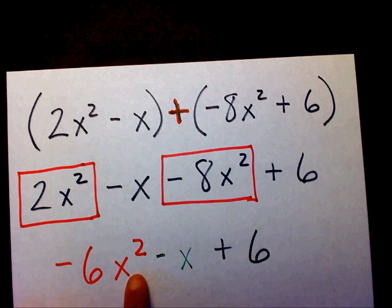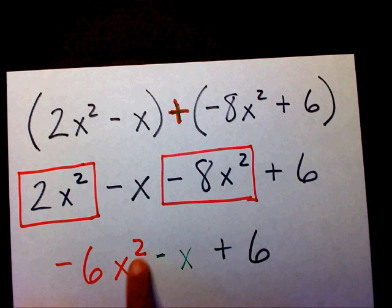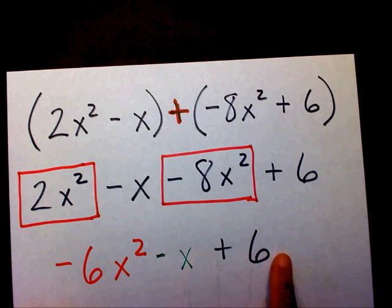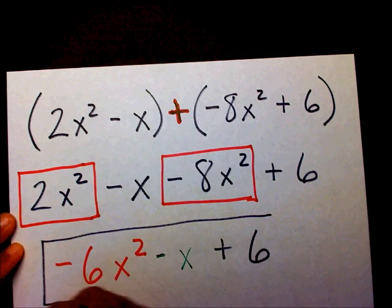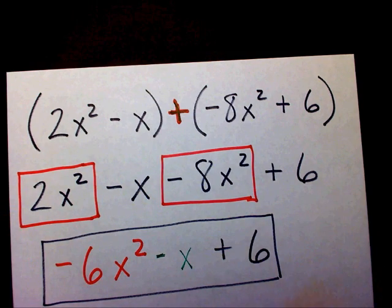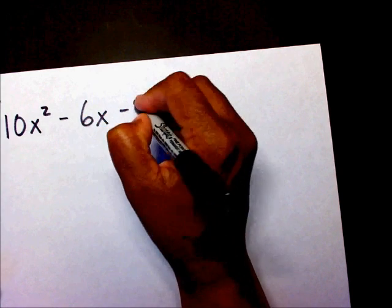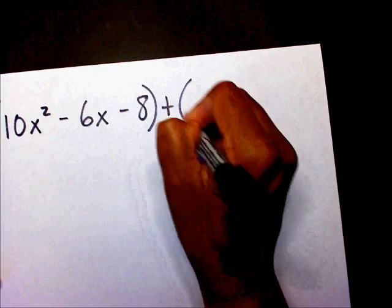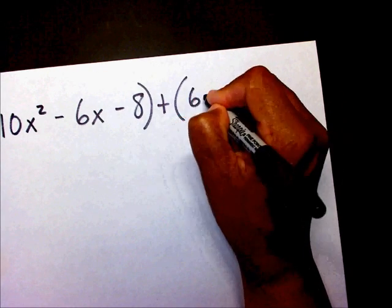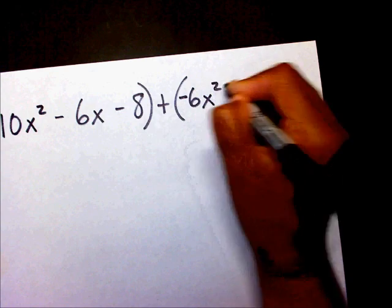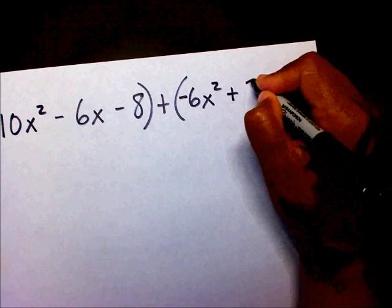Now that I've combined my like terms, I want to make sure my exponents are in descending order, so here's my final answer: negative 6x squared minus x plus 6. Now let me let you try one: 10x squared minus 6x minus 8, plus negative 6x squared plus 2x minus 9.